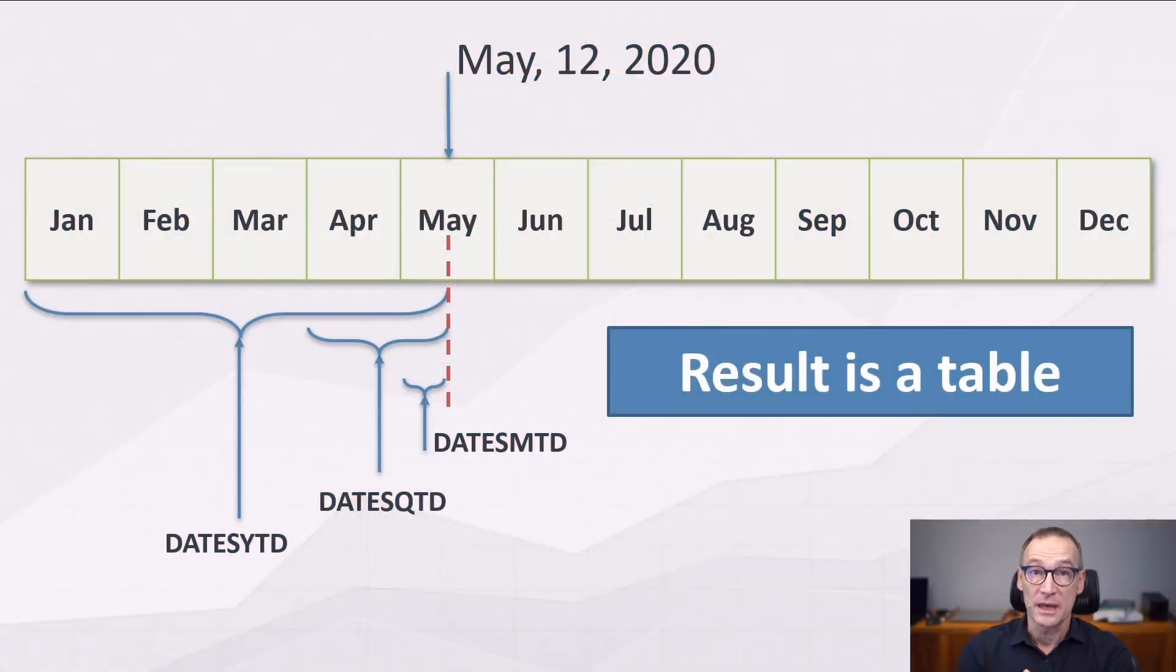There are three functions in DAX to compute period-to-date calculations. They are DatesYTD, DatesQuarterToDate (DatesQTD), and DatesMTD.